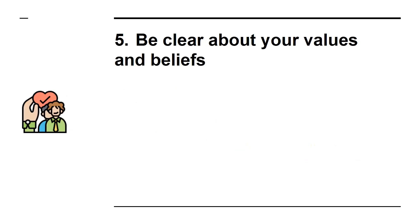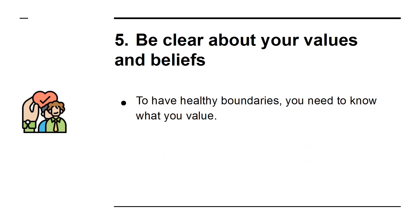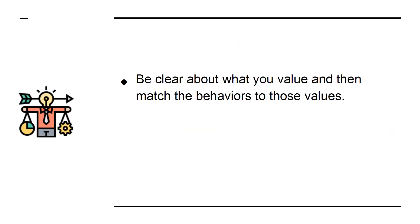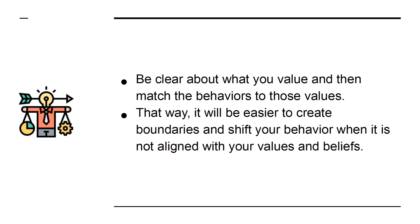5. Be clear about your values and beliefs. To have healthy boundaries, you need to know what you value. If you value compassion, but you turn around and start criticizing and gossiping with a friend, you are not in integrity with yourself. Be clear about what you value, and then match the behaviors to those values. That way, it will be easier to create boundaries and shift your behavior when it is not aligned with your values and beliefs.